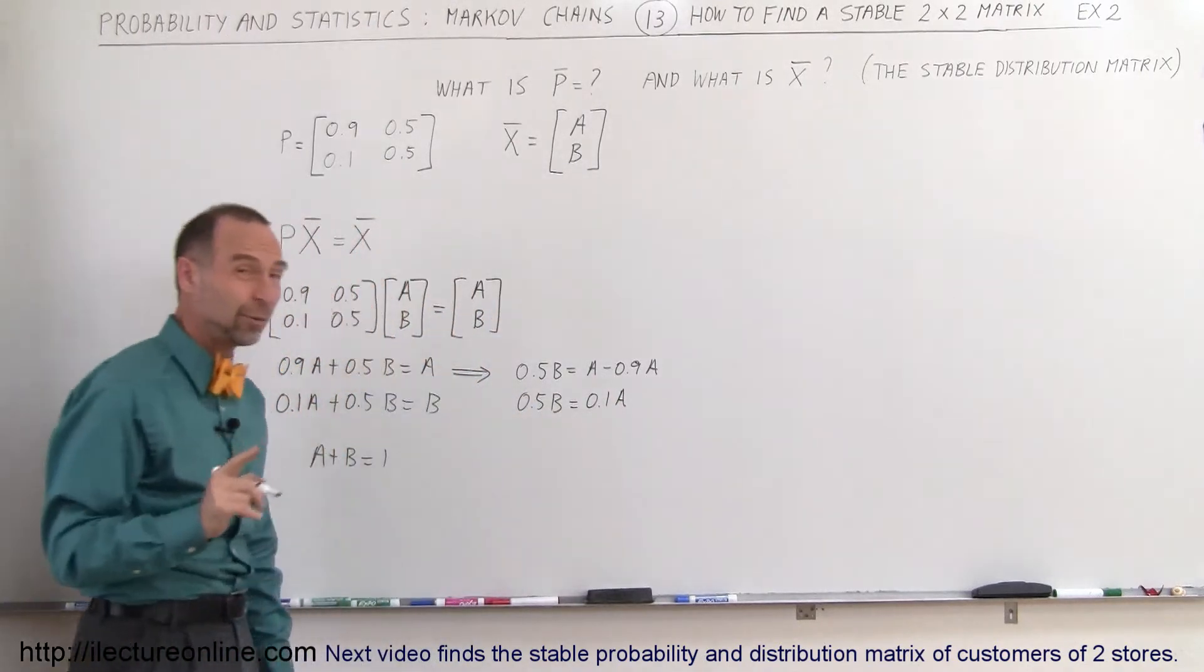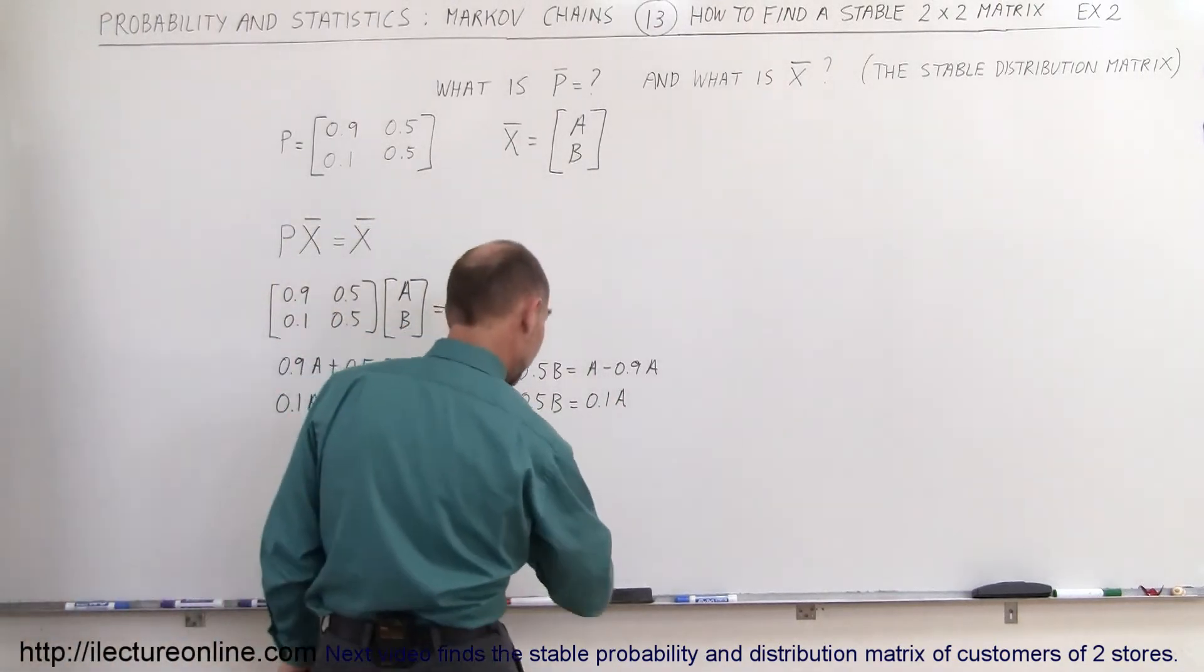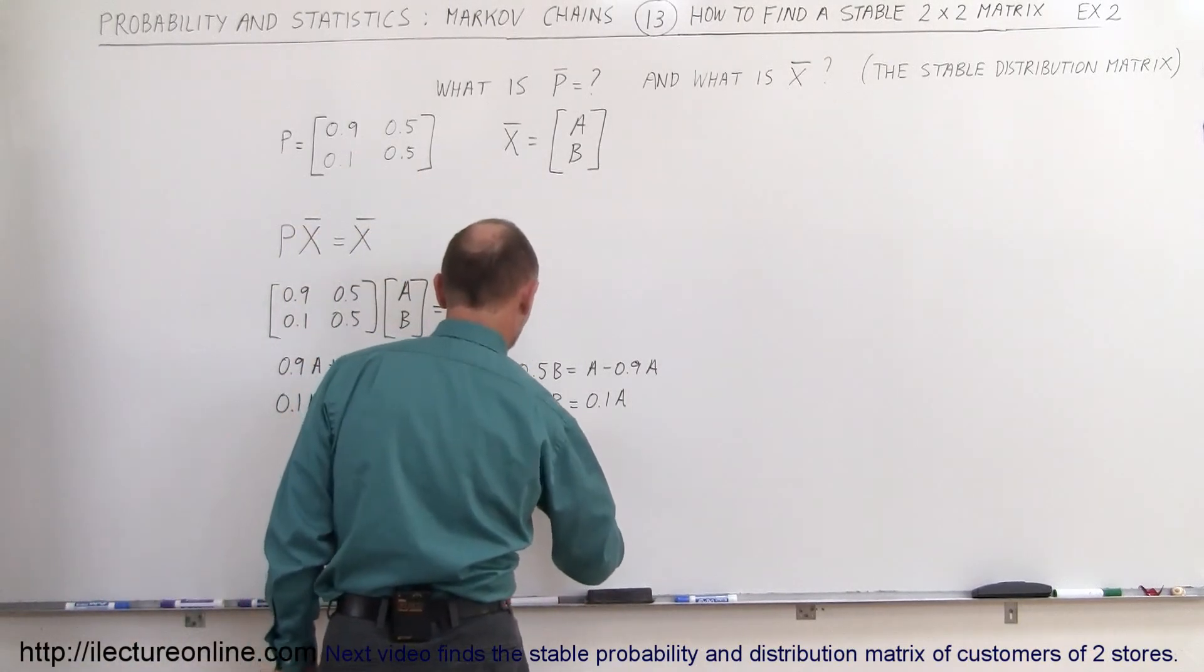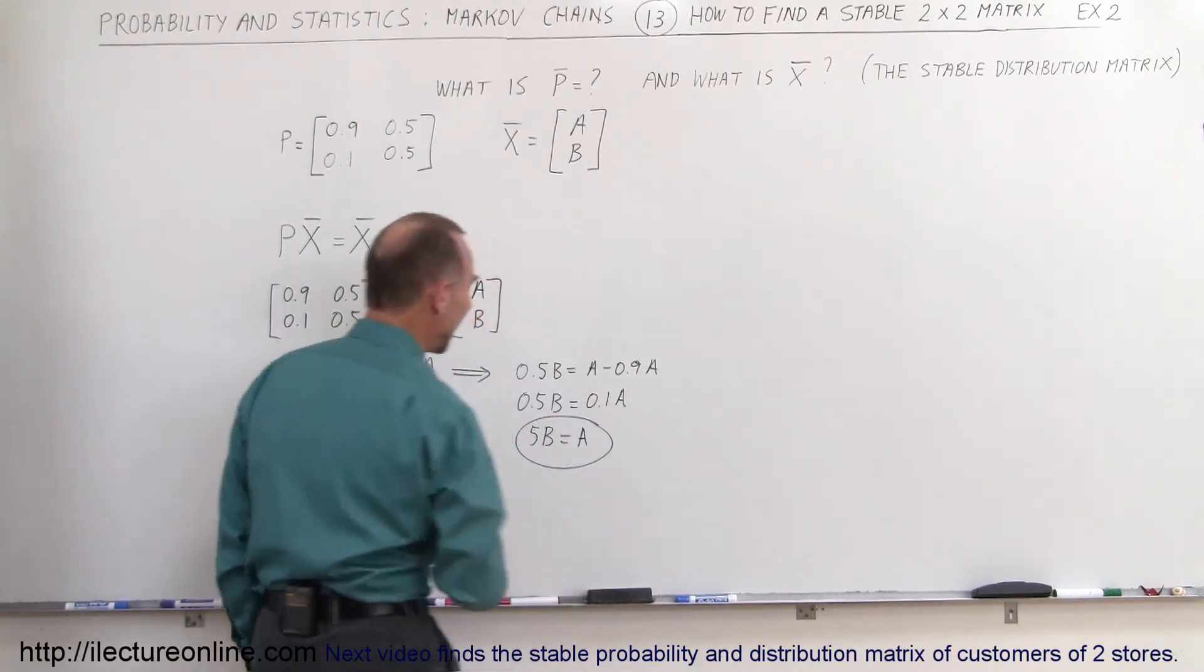Now if we multiply both sides of that equation by 10, we get 5B equals A. And so now we have a relationship between A and B.